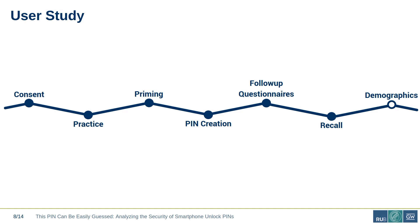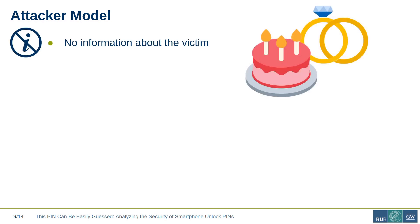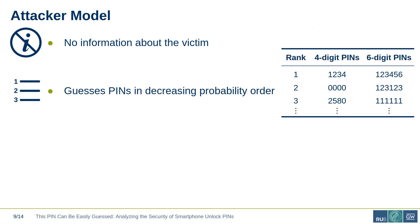Before analyzing the PINs, we need to define the attacker model. We consider an untargeted attacker with no information about the victim — no birthdates or anniversaries. This is important because we know from related work, and also saw in our study, that users select PINs based on such personal information, which a targeted attacker could exploit. We're interested in the security of PINs in general, so we consider an untargeted attacker who guesses PINs based on likelihood, starting with the most popular ones. For four-digit PINs, the attacker is informed by the Amitay dataset analyzed by Buno et al.; for six-digit PINs, we extracted PINs from the Rockyou password leak as Wang et al. did.